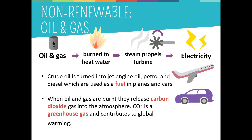Oil and gas can be burned to produce electricity. To do this, oil is burned in power plants to heat water and produce steam. This steam, which has kinetic energy, propels the blades of a turbine, converting it into mechanical energy — a sort of engine that rotates. The turbine is attached to a generator, and when it spins it produces electricity.